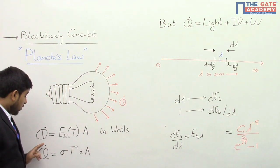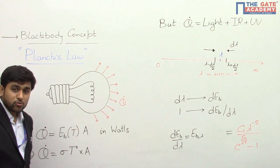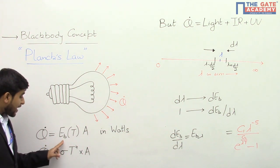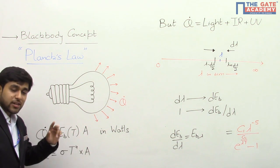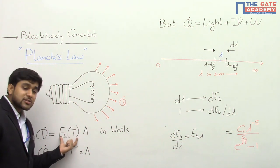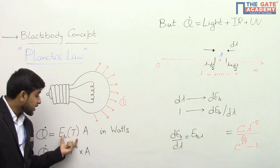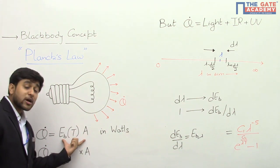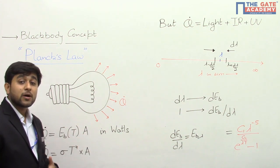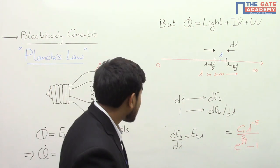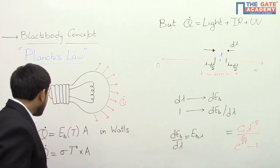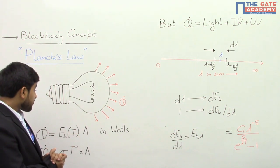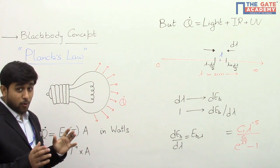Suppose Q-dot is the total amount of energy emitted by this bulb filament per unit time. Then using the total emissive power, we can find out the value of Q-dot. Q-dot will be equal to the black body emissive power multiplied by the area of the filament. The emissive power term is in joules per second per meter squared, and multiplying by area in meter squared gives joules per second, so we can find the energy emitted per unit time.